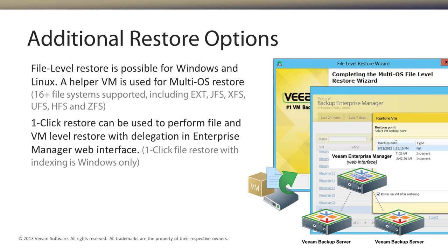The question is: how is this better than what Volume Shadow Copy Service already does? Within the operating system, VSS creates versions. But what happens if you lose the operating system that manages all those shadow copies? If you lose the server itself, your ability to go back in time is gone. What Veeam provides is: if you lose the disk or the SAN that houses all that data, you go to Veeam, right-click, spin it back up, and extract the data. You still have access to previous versions via VSS, but now you also protect yourself from those hardware failures.